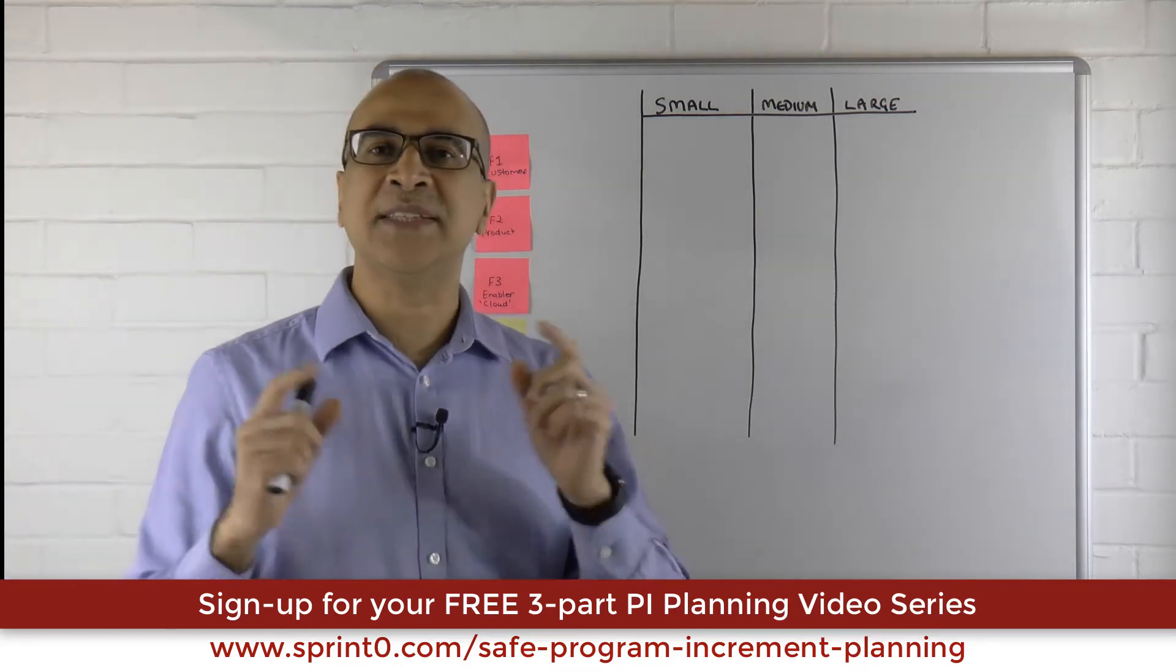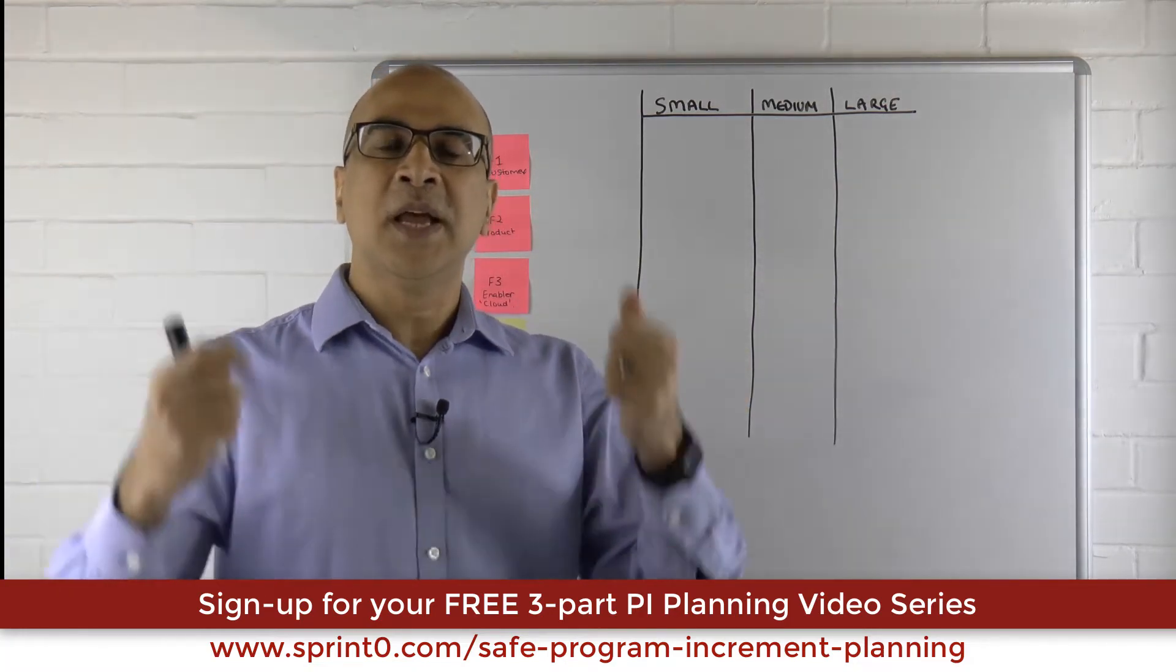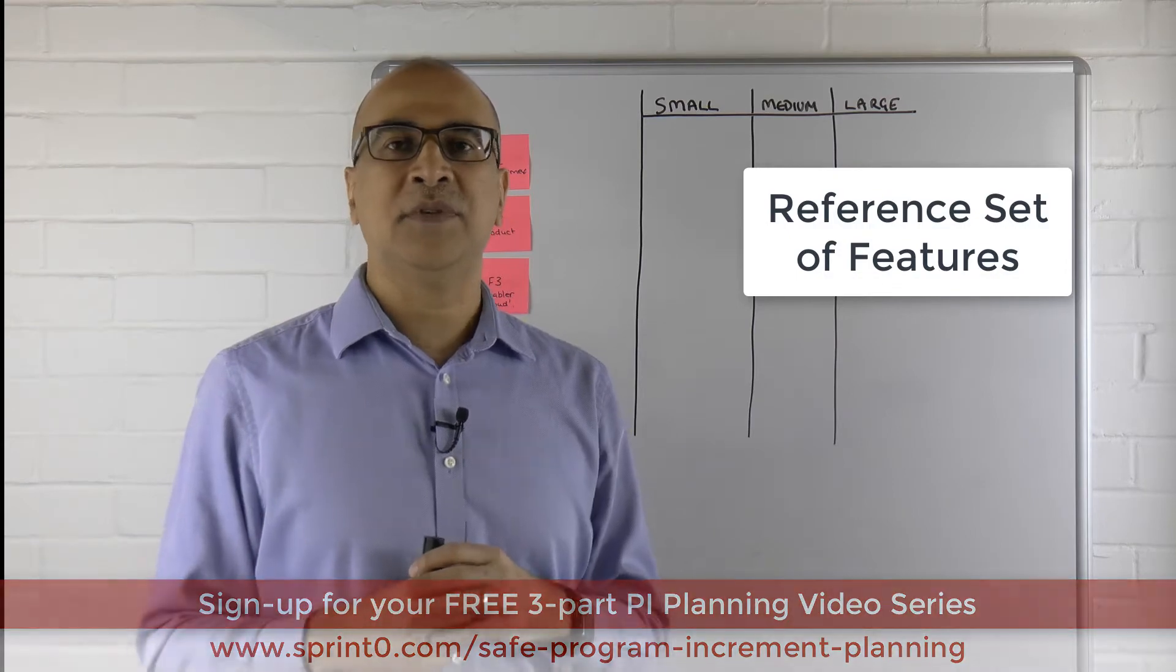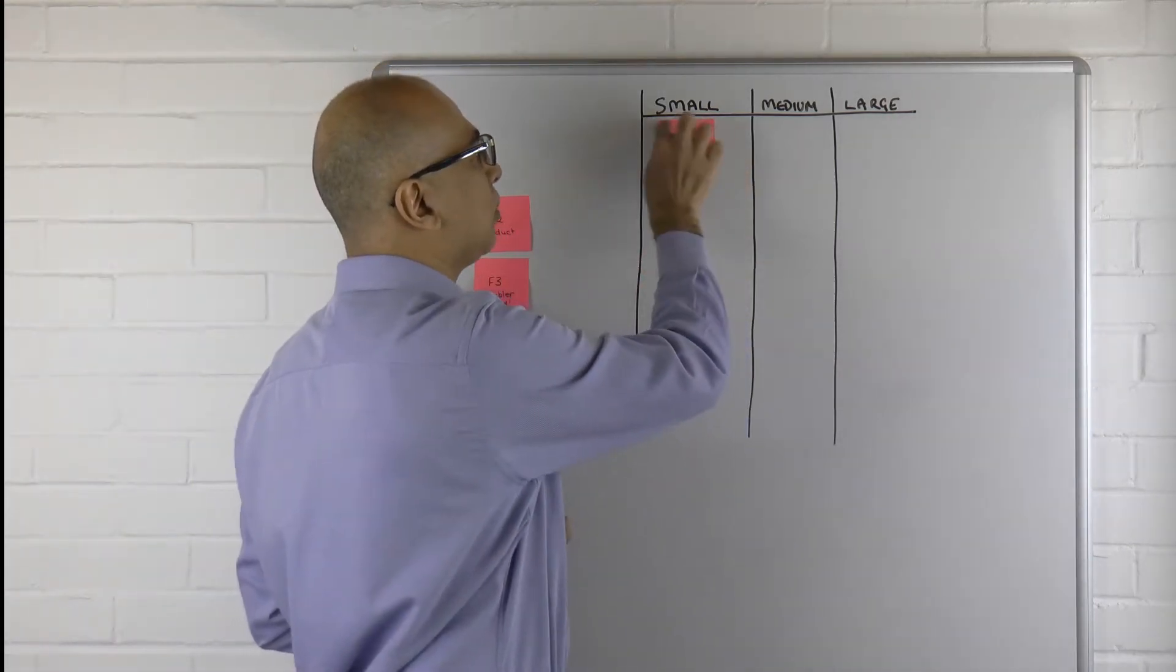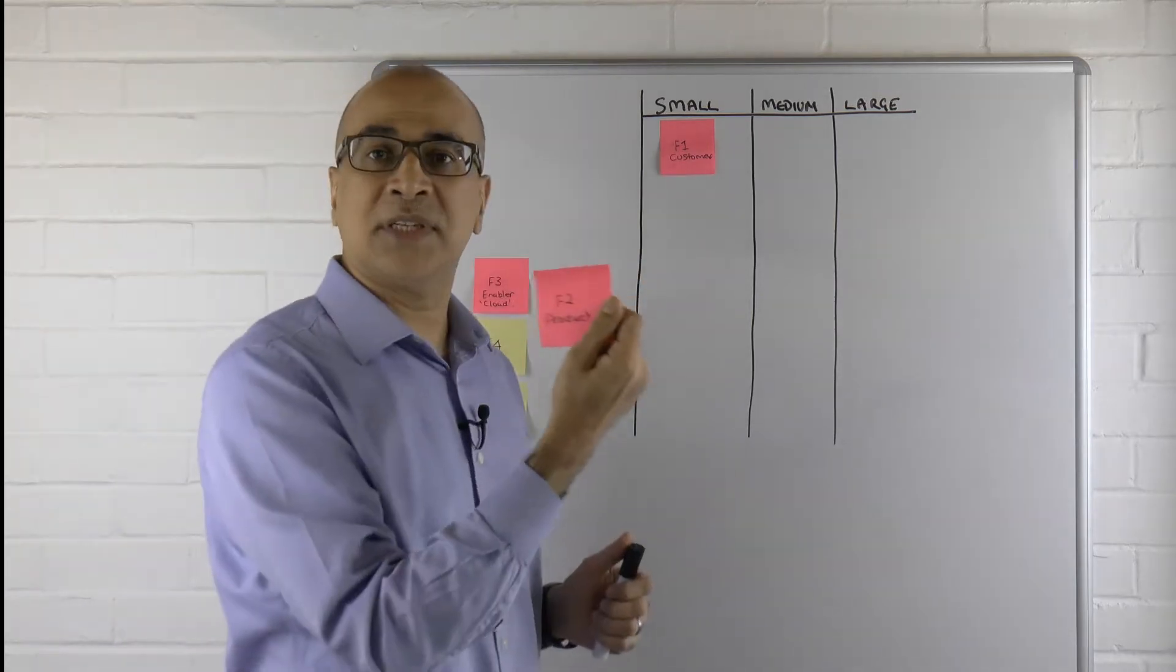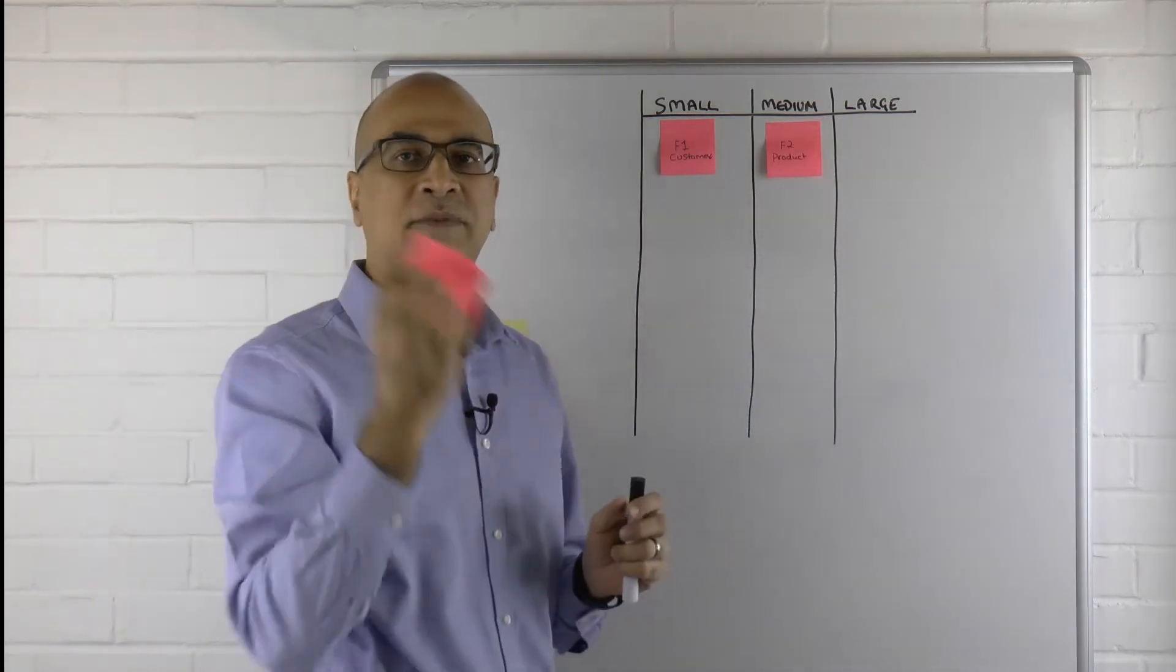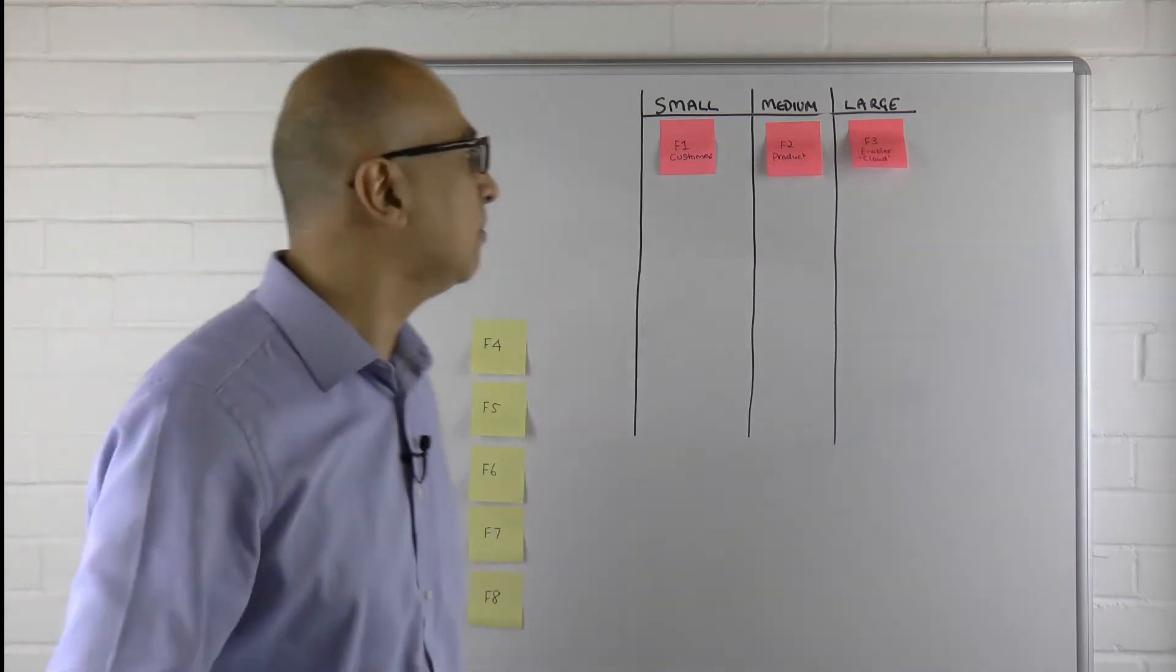The next thing you want to do is create a reference set. Here I've created just three. This is a standard, simple, straightforward set of features that you have created in the past that are understandable to all of the different individuals. Let's just say we've got a feature related to a customer journey and we said that's what we call a small. We've got a product one, let's call that a medium. And let's say we need to take our product into the cloud or whatever, let's say that's an enabler and call it large. These three things are our reference features.